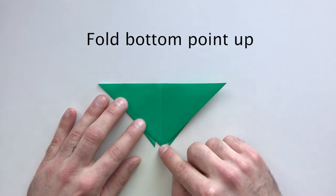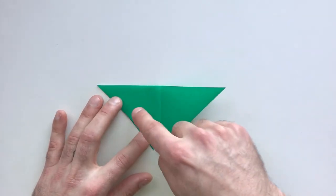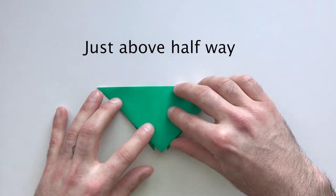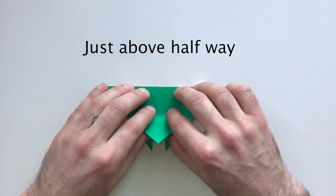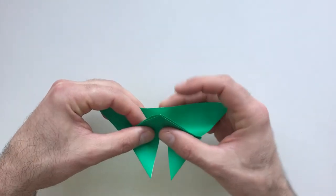Fold this point up to the top, making a horizontal crease a little way above the halfway point. I'll fold that and unfold it so you can see where it wants to be.